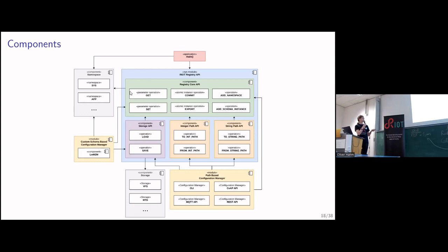Here at the bottom, you can see the storage implementations that could be provided as external dependencies. Those are the storage backends, because the RIOT registry itself doesn't dictate how your configuration data is supposed to be written to storage. So you just have an interface and the storage backend can implement it however it wants.